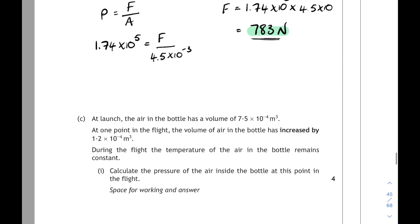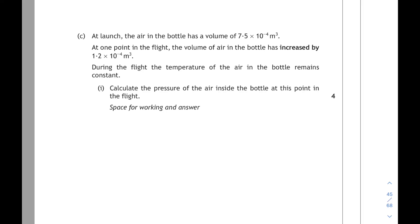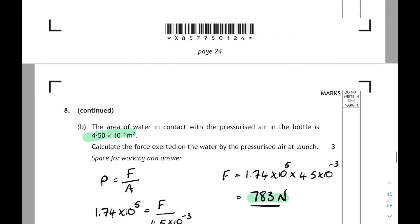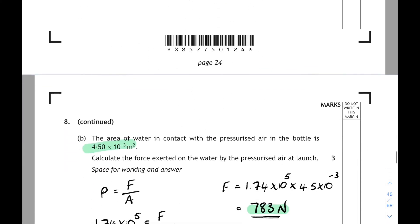Part C. At launch, the air in the bottle has got a volume of 7.5 times 10 to the minus 4 cubic metres. And at one point in the flight, the volume of the air in the bottle increases by 1.2 times 10 to the minus 4 cubic metres. What have we to do here? Calculate the pressure of the air inside the bottle at this new point in the flight. Okay. We've got the initial volume, 7.5 times 10 to the minus 4. Let's call that V1. And then the volume increases by 1.2 times 10 to the minus 4. So it will go up to 8.7 times 10 to the minus 4 cubic metres. So we've got a V1 and a V2. And we've to find P2.